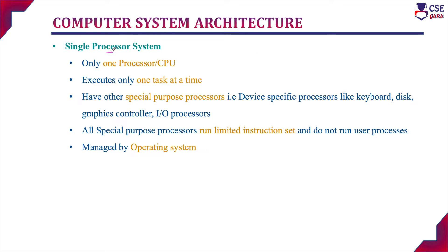Single processor system. As the name implies, the computer system will consist of only one processor or CPU. Since it consists of only one processor, the system can execute only one task at a time. We cannot execute multiple tasks. If you assign one task to the computer system, the user has to wait till it completes that task. Once the assigned task is completed, we can assign the next task. At a time, the computer system can execute only one task.